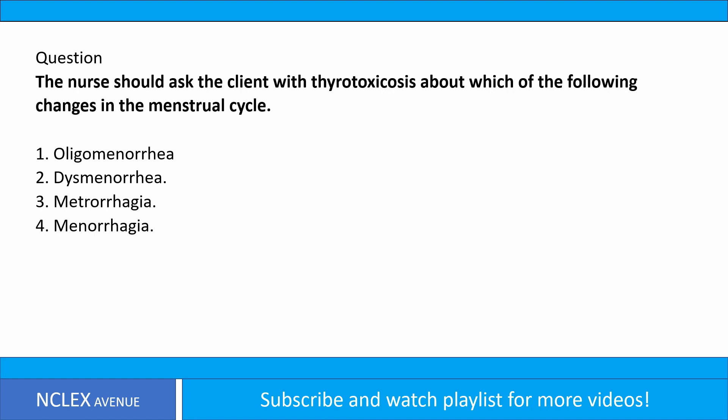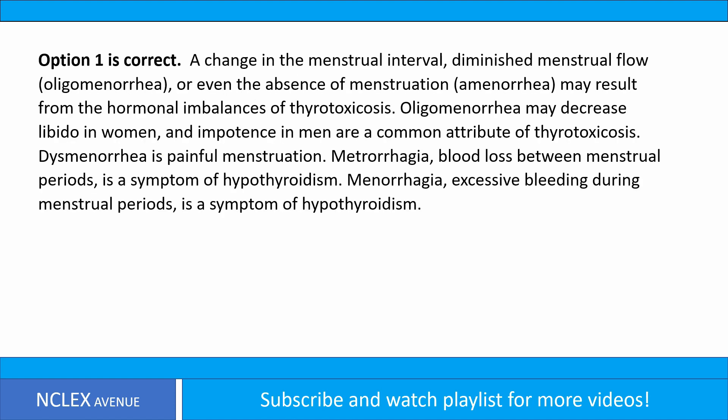Option 1 is correct. A change in the menstrual interval, diminished menstrual flow — oligomenorrhea — or even the absence of menstruation, amenorrhea, may result from the hormonal imbalances of thyrotoxicosis. Oligomenorrhea may decrease libido in women, and impotence in men are a common attribute of thyrotoxicosis.